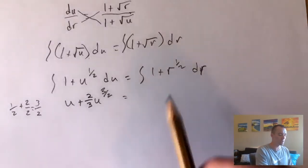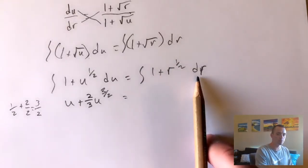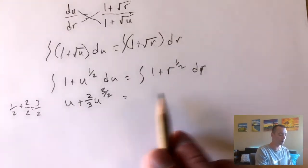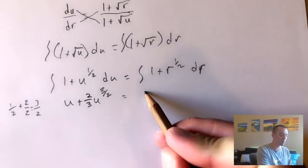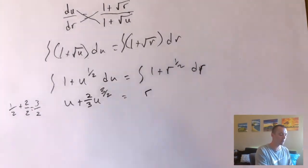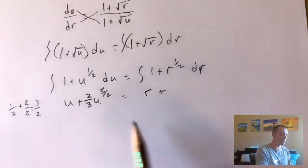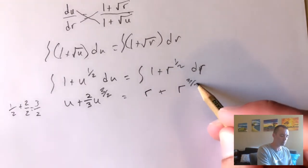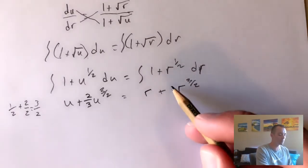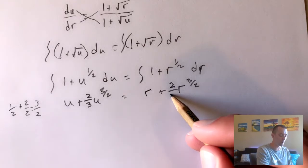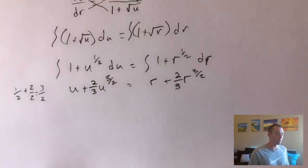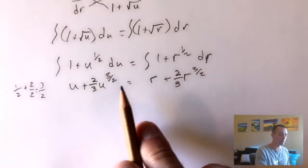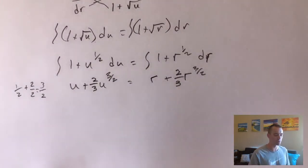On the right side, same idea — we're integrating with respect to r, so the antiderivative of 1 is just r. Then we raise the power by one up to three-halves and multiply by the reciprocal of that new power, two-thirds. Now, when you integrate you typically add a plus C. We could add plus C to both sides, but in these separable differential equations, you really just want to add the plus C to one side.